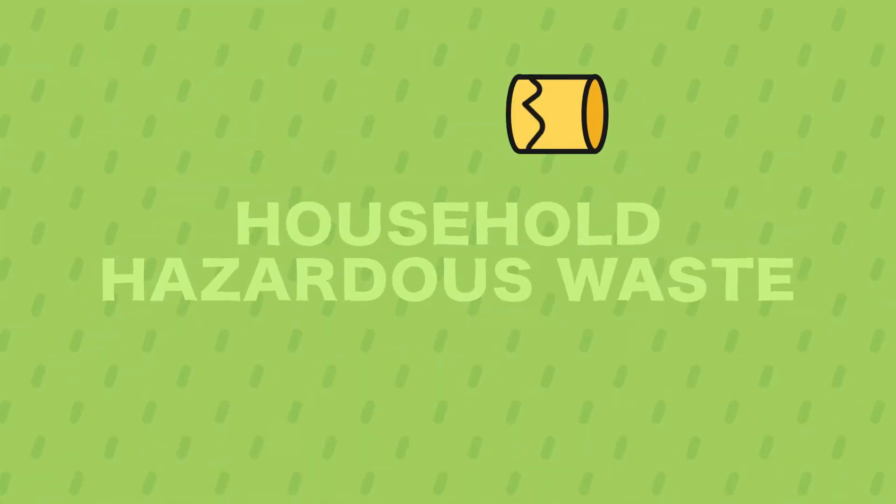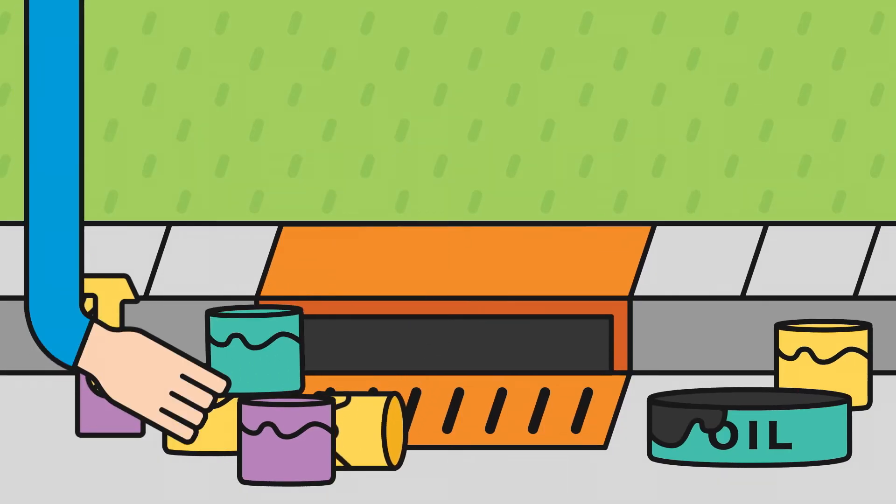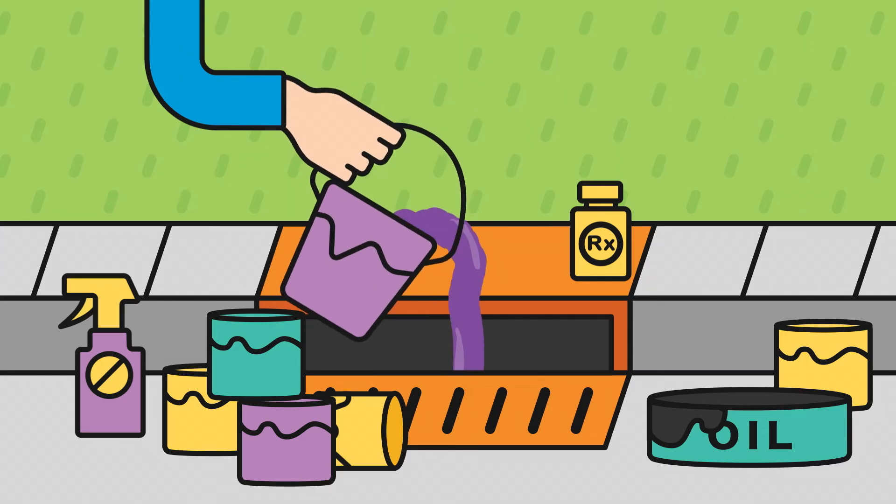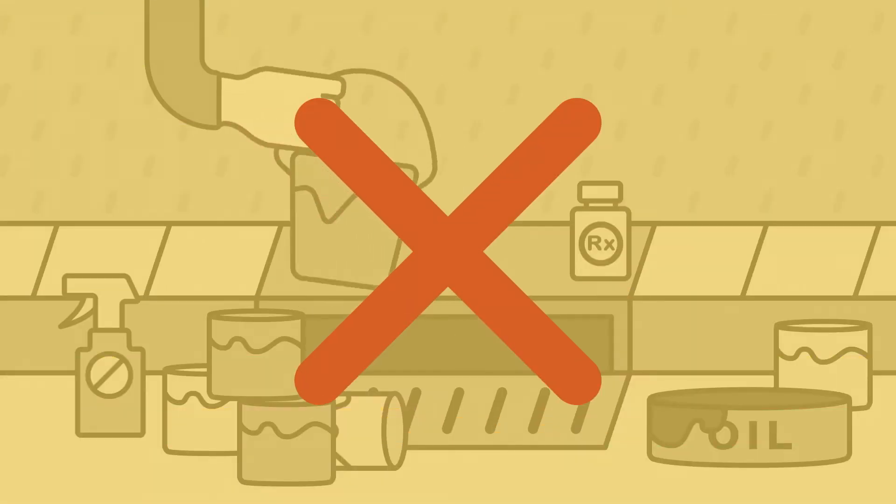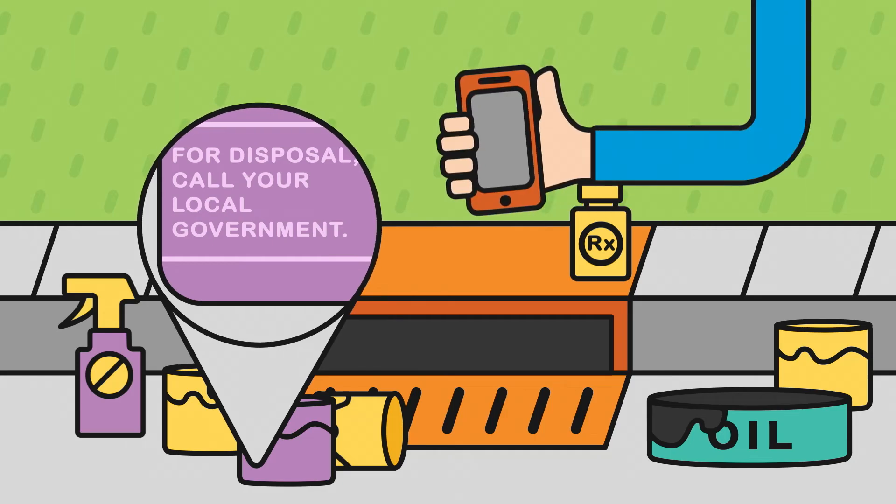Household hazardous waste. Everyday things like household chemicals, cooking grease, paint, and even medicines poison our waters when they get into the storm drain. Never dump these pollutants in the sink or outside. And always check your local regulations to learn how to dispose of them properly.